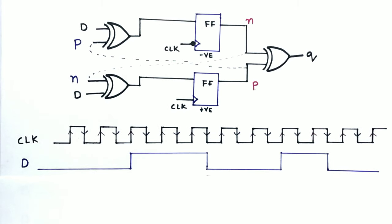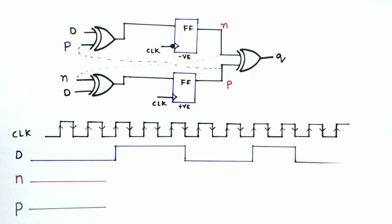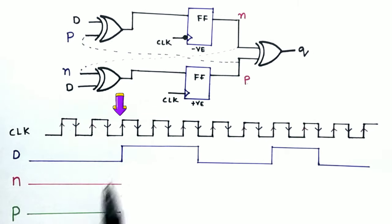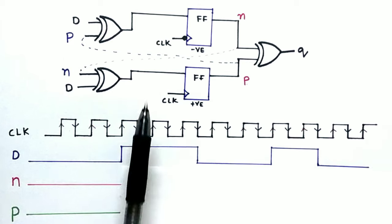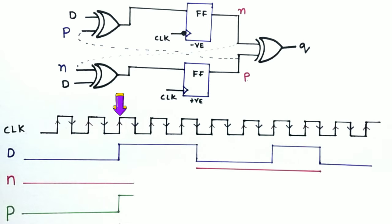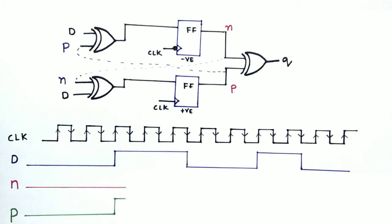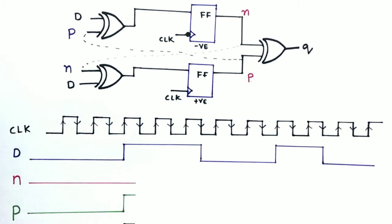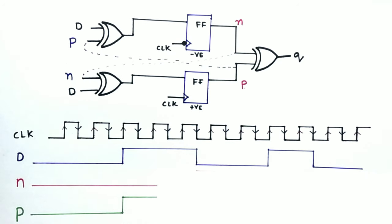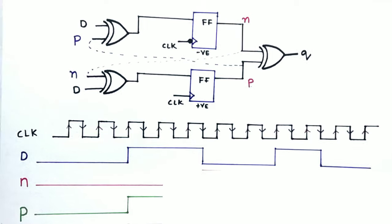I am assuming that P and N are zero at the beginning. At the first positive edge: N is zero and D is one, so the XOR gate output is one. This one passes through the positive edge flip-flop, so P becomes one at this positive edge. At the next negative edge: P is one and D is also one. Since both inputs are one, the XOR gate gives zero to the negative edge trigger flip-flop, so N remains zero. At the following positive edge, P stays high because N is zero and D is one, so this continues.